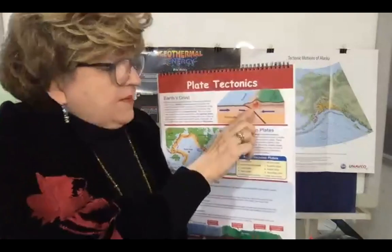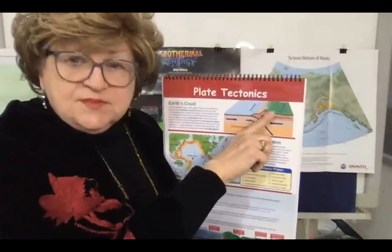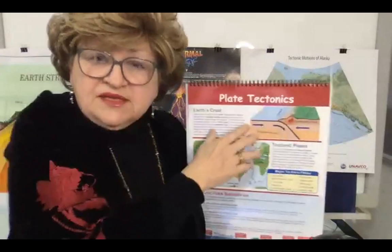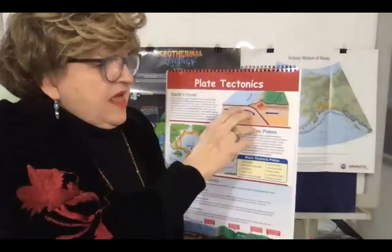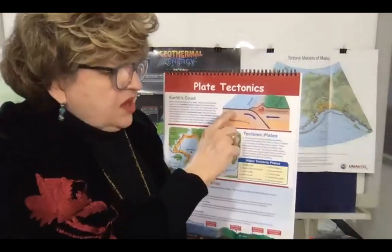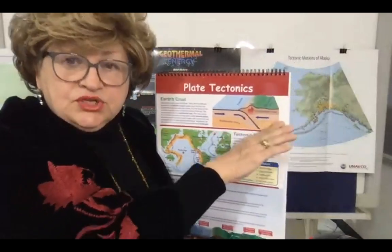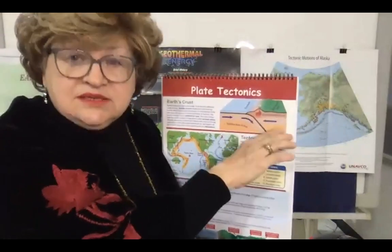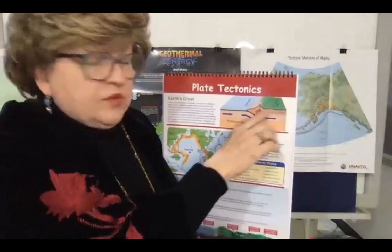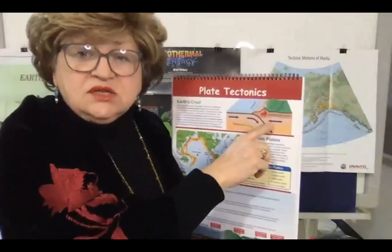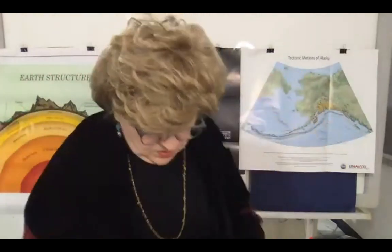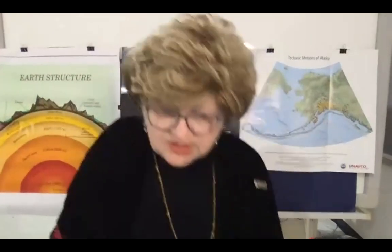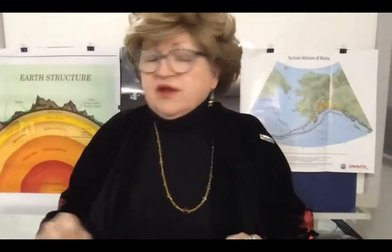When oceanic crust goes down in subduction, it pushes on the continental crust, which causes mountains to form. This is how the Himalayan mountains were formed — by the subduction of the oceanic plate pushing on the continental plate and forming those big mountains. That process is called orogeny. So subduction causes orogeny. Next we're going to look at the Great Rift Valley.